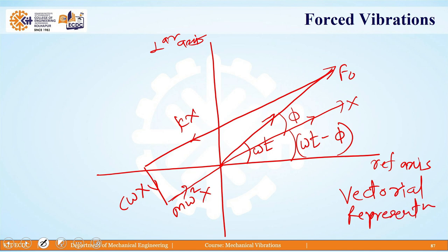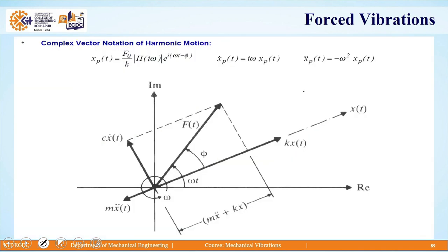This vector diagram gives us a lot of information, and with it we can solve the majority of problems. The diagram shows the vectors: F(t), C x-dot(t), M x-double-dot, and KX — this is the vectorial representation we are working with.